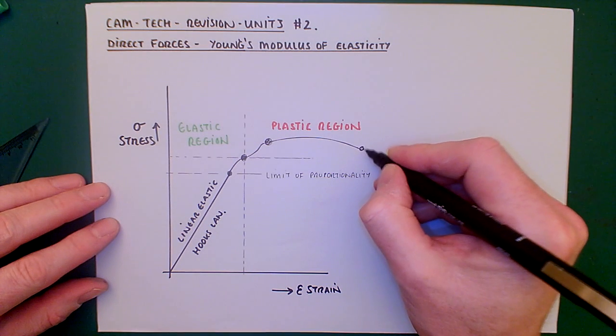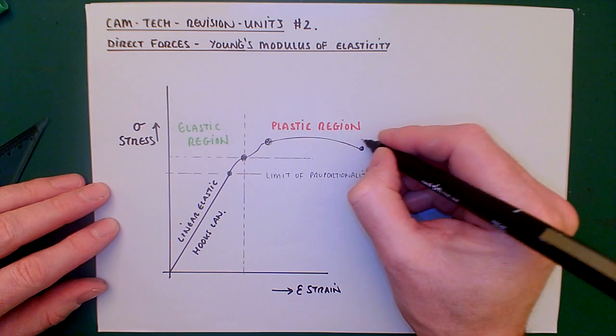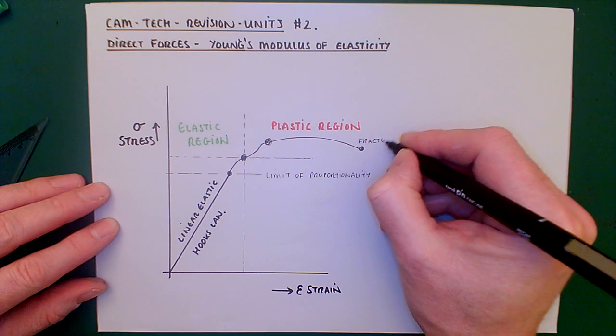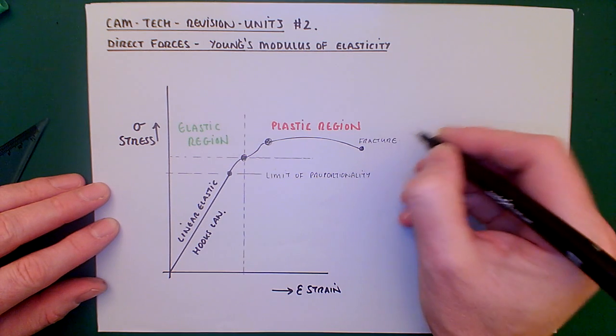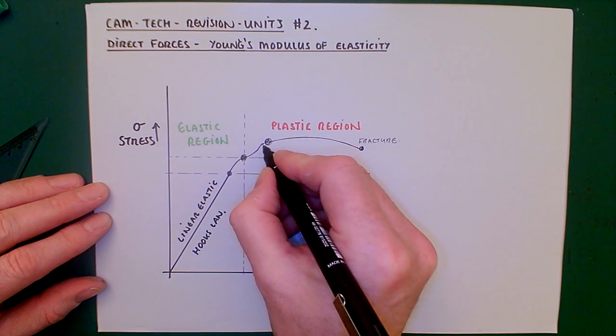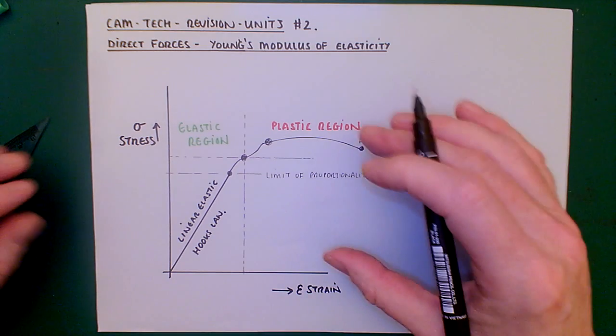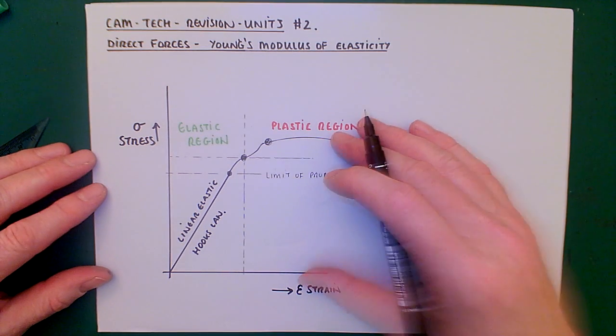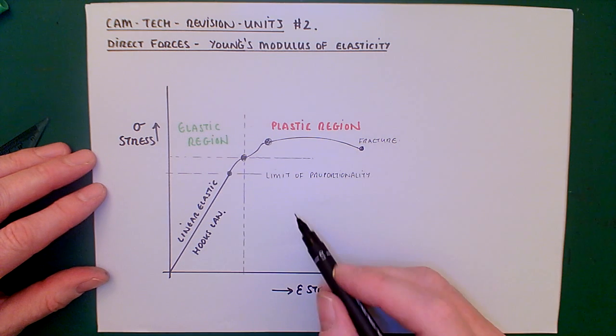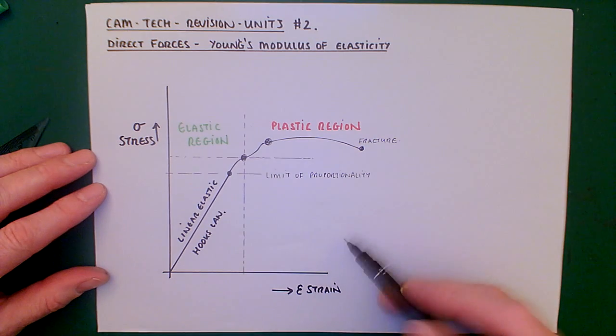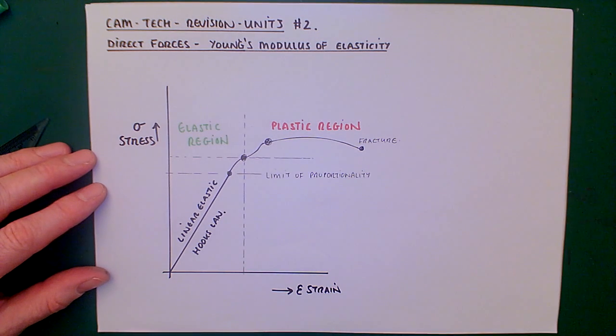And the point here would be the fracture point. The point in which the material would fracture. Now, this is usually done under a tensile load. So it's the tensile modulus for elasticity, the Young's modulus for elasticity. And it's a graph that you need to gain some familiarity with. It may be required to describe that in an examination.